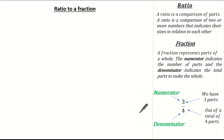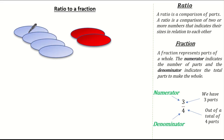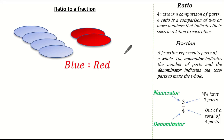Now that we know what a ratio and fraction are, let's look at a very basic example. Here you can see we have four blue counters and two red counters. If the question wanted us to find the ratio of blue to red, it would simply be four to two, because we have four blue to two red.